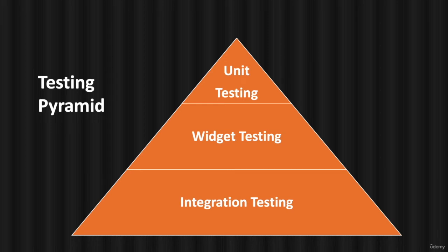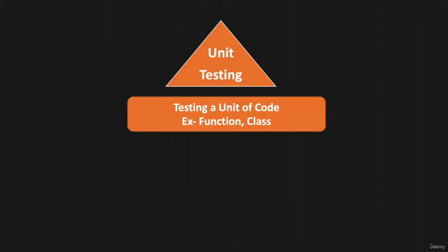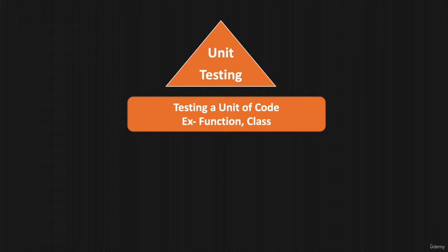Now let us talk about unit testing, the first block in our testing pyramid. When we say unit testing, we are basically saying that we need to test a unit of our code. A unit of code means a functionality, a function which you have written, a complete class which holds all the functionality, or anything like struct or enum — wherever you have written any functionality, you can test it using unit testing.